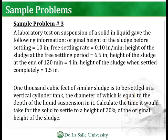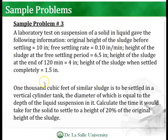Let's go to a sample problem. A laboratory test on a suspension of a solid in liquid gives the following information: original height of the sludge before settling is 10 inches; free settling rate is 0.10 inch per minute; height of the sludge at the free settling period is 6.5 inches; height at the end of 120 minutes is 4 inches; height when settled completely is 1.5 inches. Now 1,000 cubic feet of similar sludge is to be settled in a vertical cylindrical tank where the diameter equals the depth of the liquid. Calculate the time for solids to settle to a height of 20% of the original height.